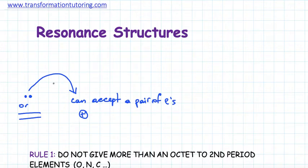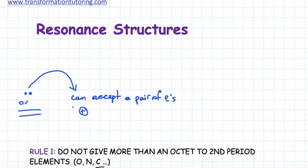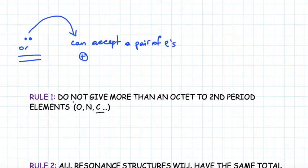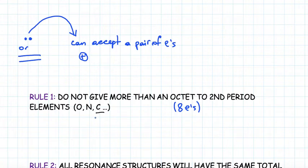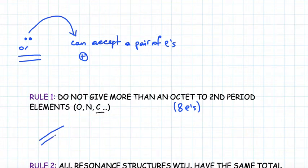Now that we know what the curved arrow is, we will learn how to use it. But first, let's go through some rules for drawing the correct resonance structures. The first rule is to not give more than an octet — eight electrons — to second period elements such as oxygen, nitrogen, and carbon. They cannot have more than eight electrons.